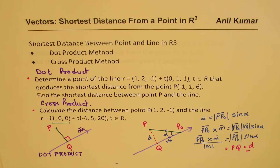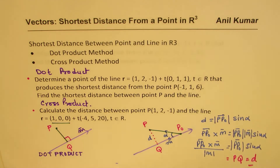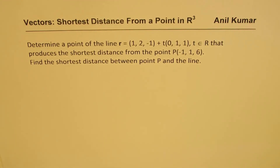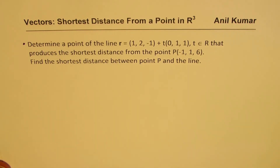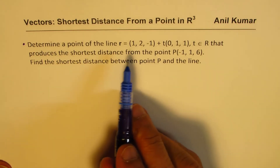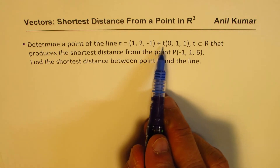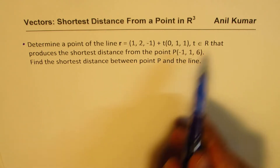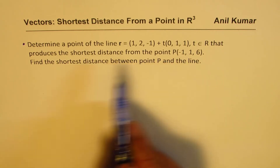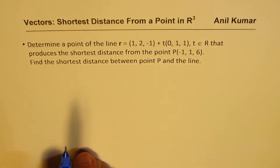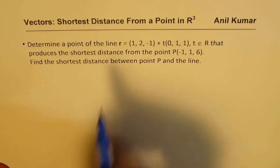Let's begin with the solution of the first example: determine a point on the line R = (1, 2, −1) + t(0, 1, 1), t ∈ ℝ, that produces the shortest distance from the point P. Find the shortest distance. The first step is to find a general point on the line.